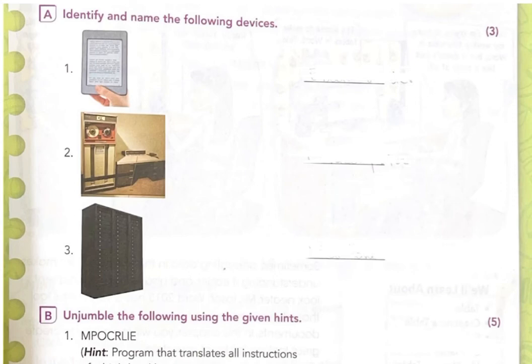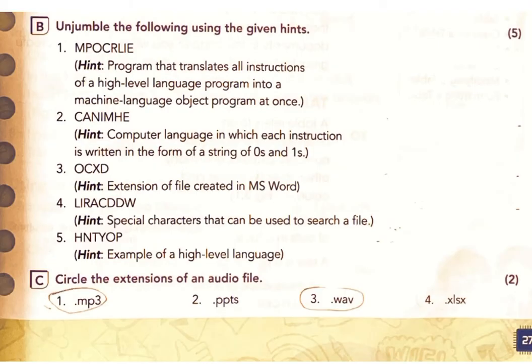Page 27 — Worksheet 1, Chapters 1 and 2. Section A: Identify and name the following devices. Answers: 1) E-book reader, 2) Mini computer, 3) Mainframe computer. Section B: Unjumble the following using the given hints. Question 1: 'M P O C R L I E' — Hint: A program that translates all instructions of a high-level language program into machine language at once. Answer: Compiler.